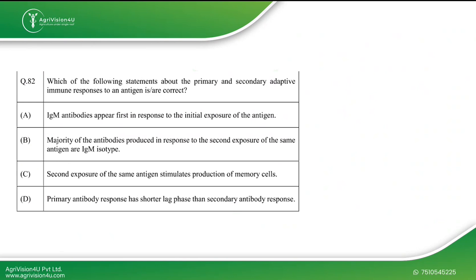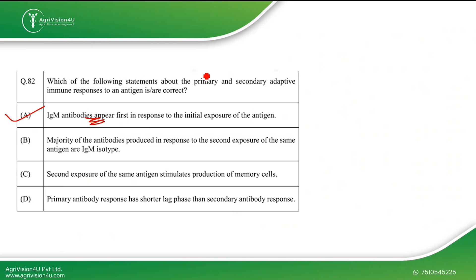The next question asks which statements about primary and secondary adaptive immune responses are incorrect. IgM antibodies appear first in response to initial antigen exposure — this is correct. IgM is the first antibody produced in response to infection and does not require class switching; it is only synthesized as long as the antigen remains present because no memory cells are formed initially.